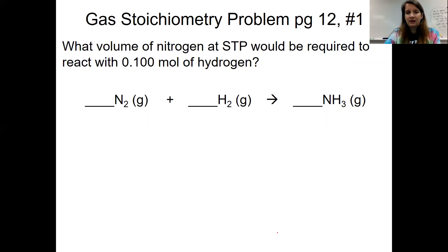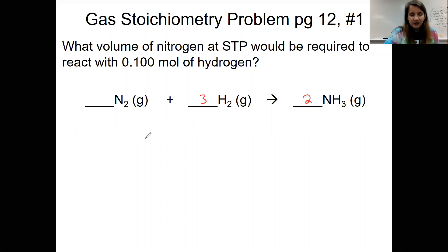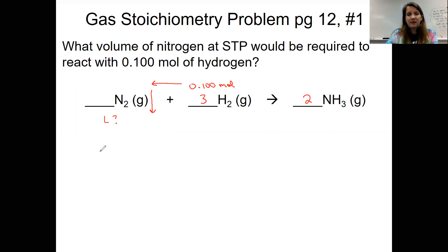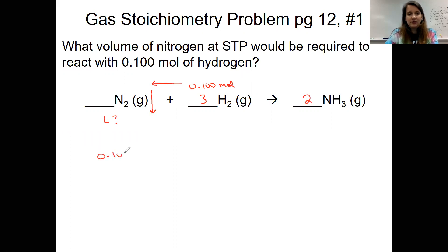Let's go ahead and balance this. We need a two over here and a three over here. Remember, we're going to write down our givens around our reaction. We have 0.100 moles of nitrogen and we're looking for the volume — the liters — of hydrogen. That means we're going to have to do one step to get over the nitrogen and one step to get into the volume. We always start by writing our given: 0.100 moles of hydrogen.